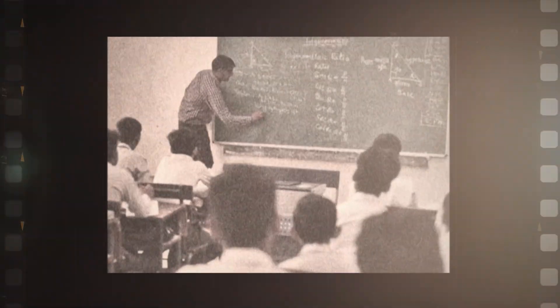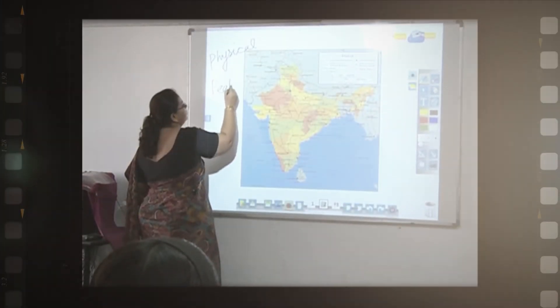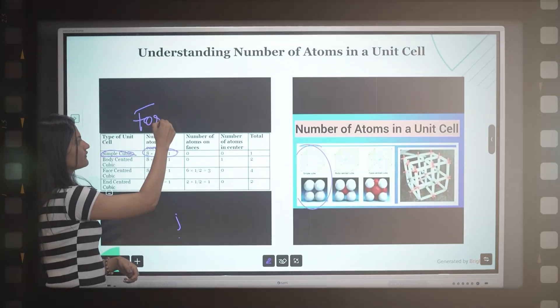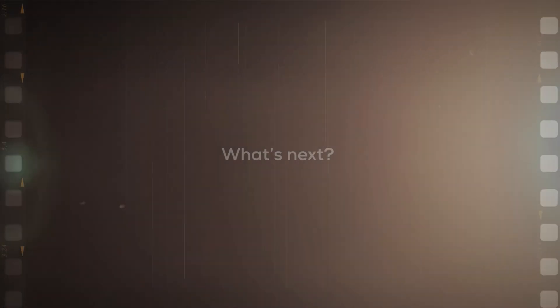Classrooms have come a long way, evolving from chalkboards to digital screens, and now to AI-powered smartboards. But what's next?